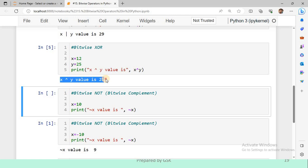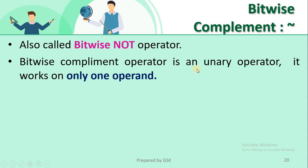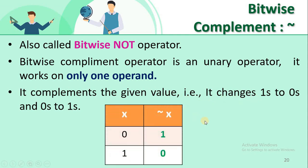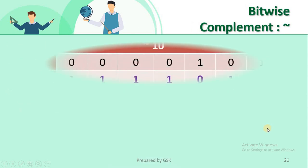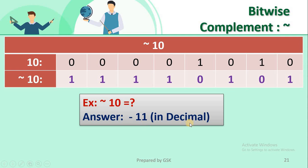Executing XOR with values 12 and 25, x XOR y value is 21. Bitwise complement, or bitwise NOT, is a unary operator working on only one operand. It complements the given value — changing 1s to 0s and 0s to 1s. The truth table shows: input 0 gives result 1, input 1 gives result 0. For example, with input 10, its binary equivalent has the bits flipped, and we get the decimal value minus 11.